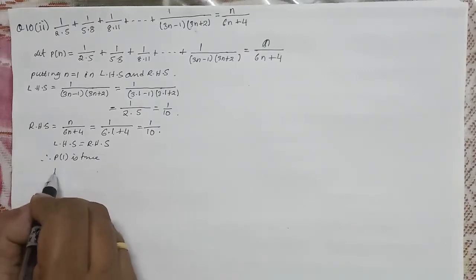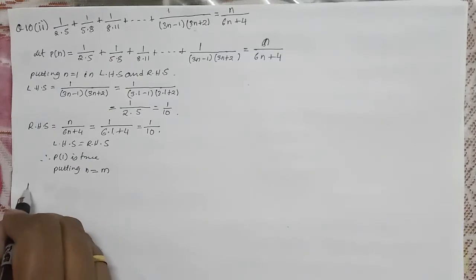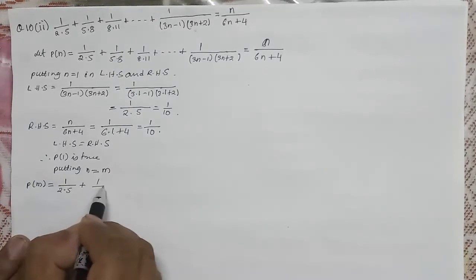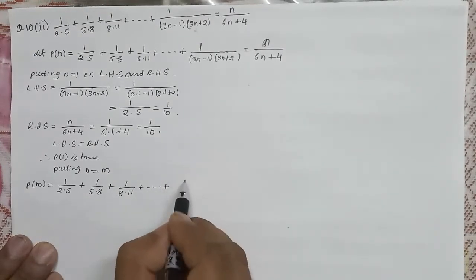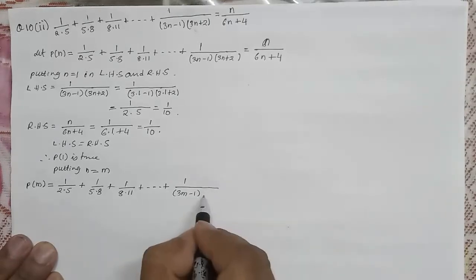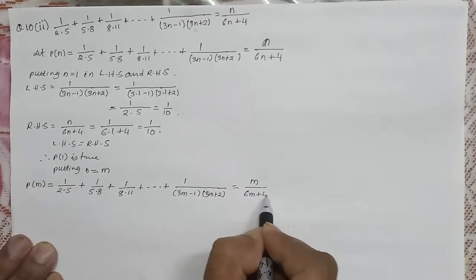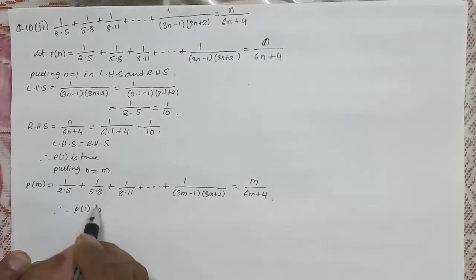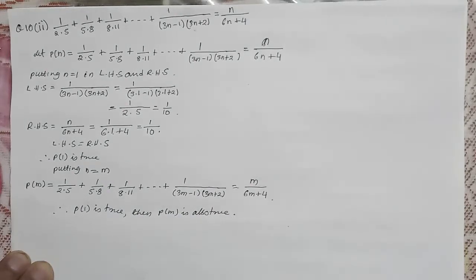P(1) is true. Next, putting n = m. The series P(m): 1/(2×5) + 1/(5×8) + 1/(8×11) + ... + 1/((3m-1)(3m+2)) = m/(6m+4). This is assumed to be true. Therefore, when P(1) is true, P(m) is also true.